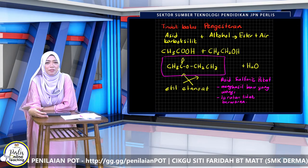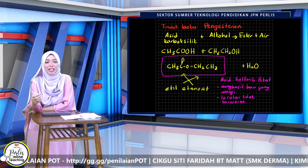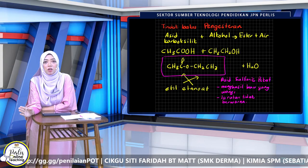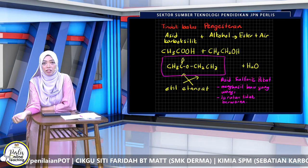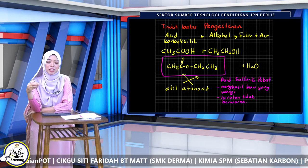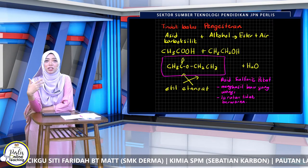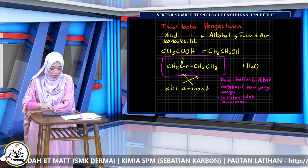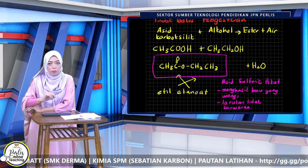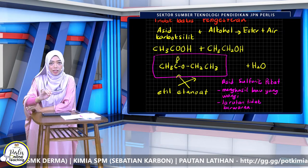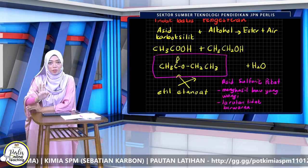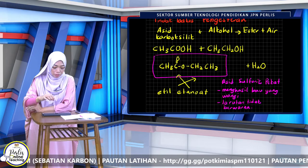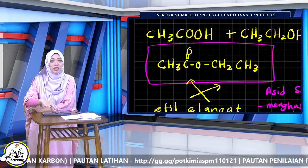Yang favourite ni soalan adalah tindak balas pengesteran — esterification. Asid karboksilik dengan alkohol akan hasilkan ester dan air. Perkara yang sama kita akan bincangkan dalam penghasilan ester — untuk hasilkan ester guna tindak balas pengesteran. Ini cara kita nak tentukan formula molekul untuk ester yang terhasil berdasarkan alkohol dengan asid karboksilik tadi.